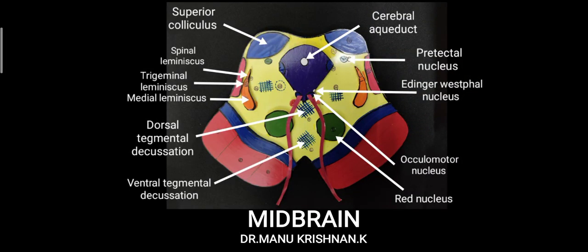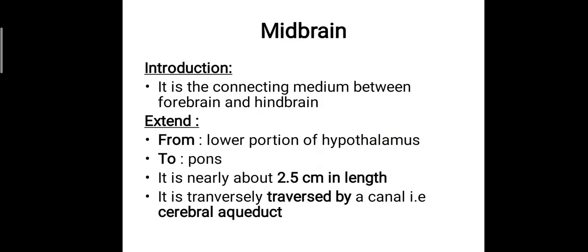Hi everyone, this is Dr. Manu Krishnankai and today we will be discussing about the anatomy of midbrain. The midbrain is the connecting medium between the forebrain and the hindbrain, and it extends from the lower portion of the hypothalamus to the pons. It is nearly about 2.5 cm in length and it is traversed by a canal, that is the cerebral aqueduct.